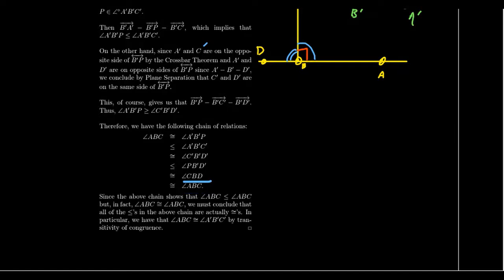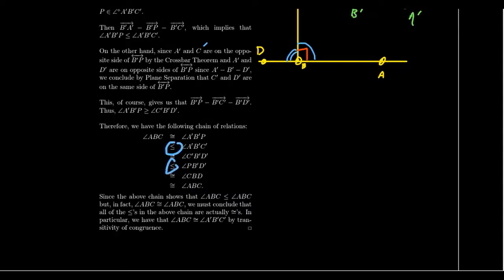Notice what we have going on here: we have angle ABC ultimately congruent to angle ABC. We have this string of congruences and less-than-or-equal-tos, and we start and stop with the same angle ABC. Since the angle is not strictly less than itself, the only way this chain of inequalities can hold is if all the inequalities are actually congruences. Tracking down the middle of the list, we have ABC, which is what we start with, but also A'B'C' is in there as well. So those two angles are congruent to each other by transitivity of congruence.